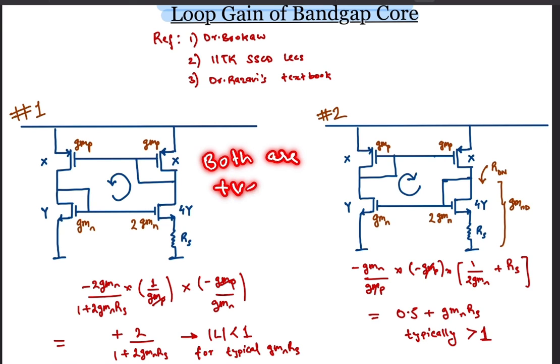This is effectively 0.5 plus GMN RS which is greater than 1 in magnitude for typical GMRS values. So, this is also positive feedback with a gain of more than 1. This is thus a recipe for instability.